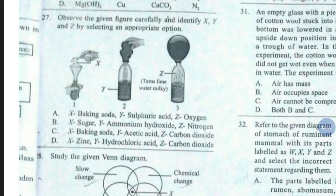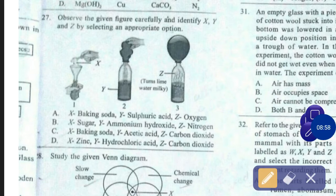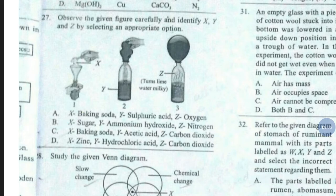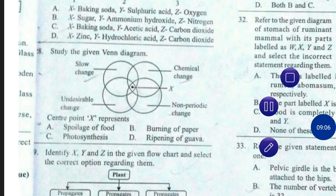Question number 27. Observe the given figure carefully and identify X, Y and Z by selecting an appropriate option. The correct answer is option number C — X: baking soda, Y: acetic acid, Z: carbon dioxide.